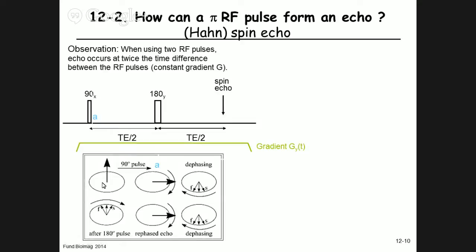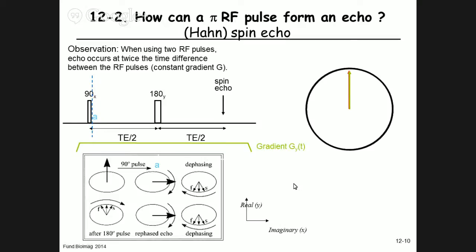After the 90-degree X pulse, the magnetization initially along Z is tilted into the Y direction — state A. In the transverse plane, four magnetization vectors at different positions along the gradient direction Y precess with different frequencies because they experience different magnetic fields. As time progresses toward the 180-degree pulse, they dephase — this is state B, just before the 180-degree pulse.